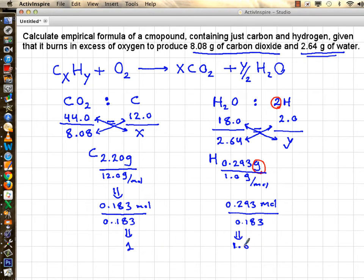The smallest number that you can multiply 1.6 by to get a whole number is 5. So multiply this by 5, which happens to be 8, also multiply your carbon by 5, which is 5.